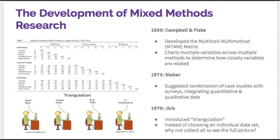Though Campbell and Fisk pioneered this method, they were still only using quantitative data. Soon after, researchers were looking for ways to integrate qualitative data into their study. Sieber then suggested the combination of case studies with surveys as a way to supplement the quantitative data with qualitative data. In 1979, Jig conducted a survey to understand the effects a business merger would have on a company and its employees.